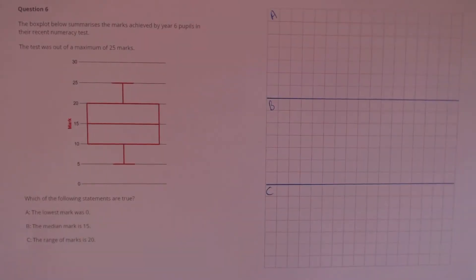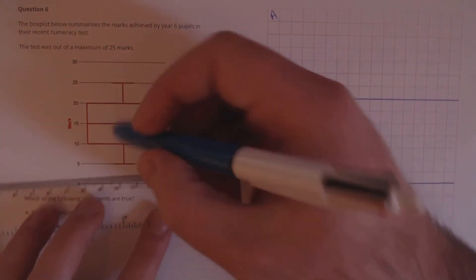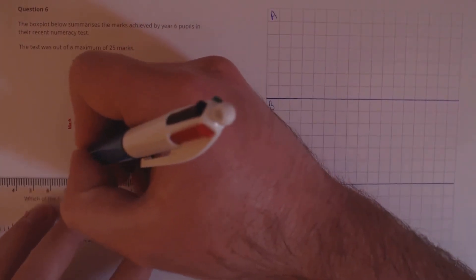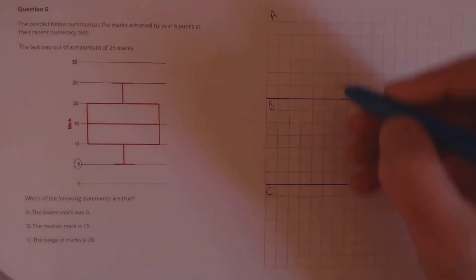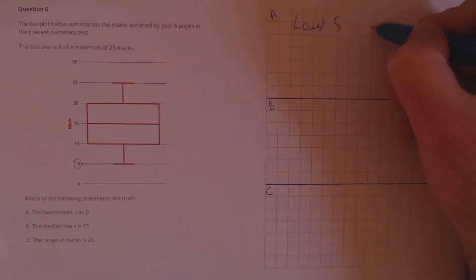Question 6. The box plot below summarises the marks achieved by year 6 pupils in their recent numeracy test. The test was out of a maximum of 25 marks. Which of the following statements are true? A: the lowest mark was 0. The lowest mark on the box plot is here, which is 5. So the lowest is 5 — the claim was 0, so that is false.